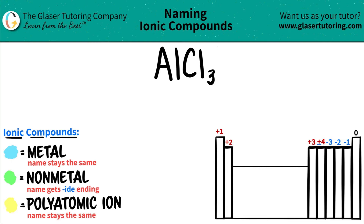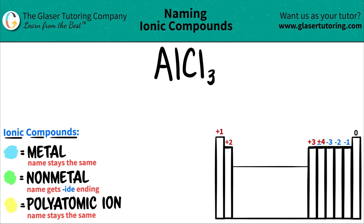Today, we are going to be naming the ionic compound AlCl₃. So we have only two elements here. We have aluminum, which is Al, and then we have Cl for chlorine.